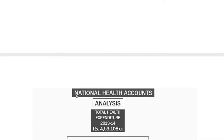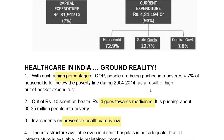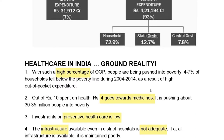These are the three health care units present in Indian society. Coming to the accounts of the health sector, we can see that current expenditure is almost 93% of total health expenditure — this is according to 2013-14. Within this 93%, again, 72.9% of health expenditure is coming from only households, meaning out-of-pocket expenditure is increasing.